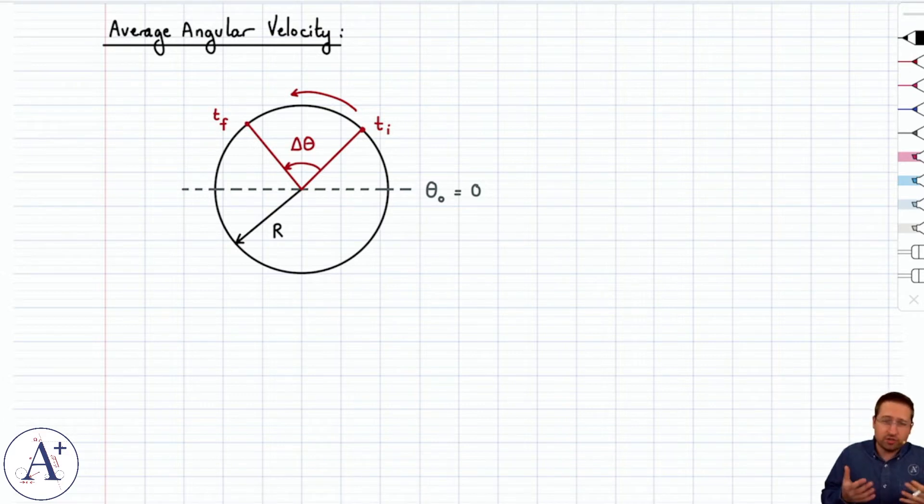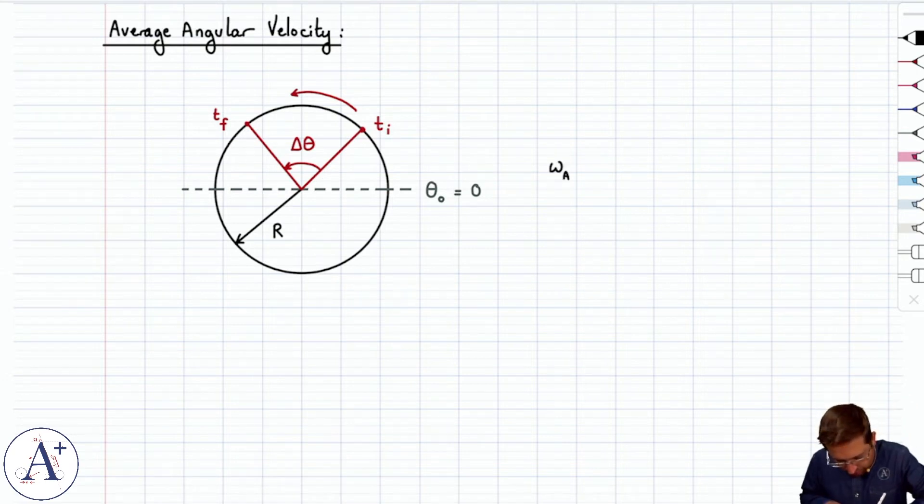And your average angular velocity is going to represent the ratio of your angular displacement to the time it takes to undergo that angular displacement. So Greek letter omega average represents the average angular velocity, and that's delta theta over delta t.